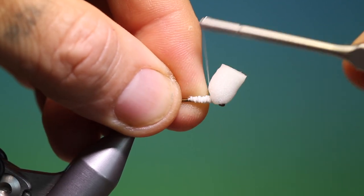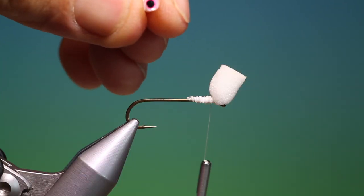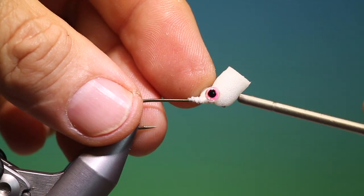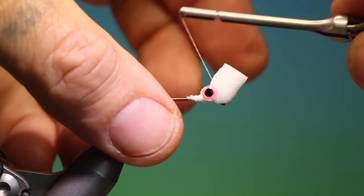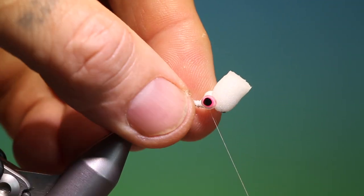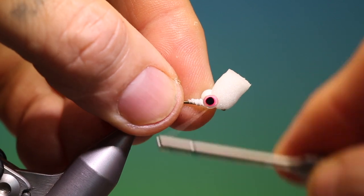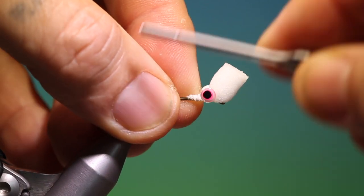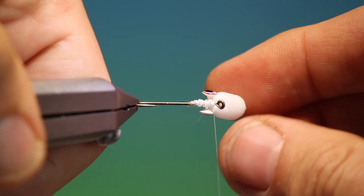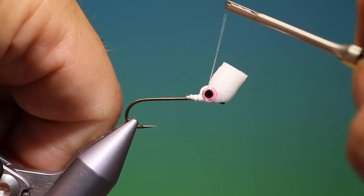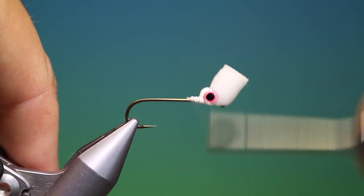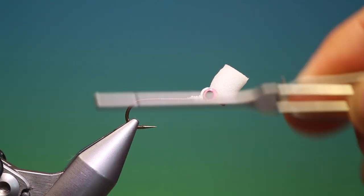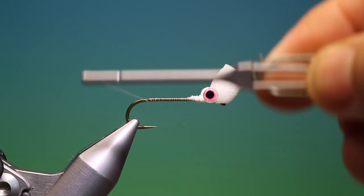Right into the foam head, and I've got some lightweight dumbbell eyes. You can use tape eyes if you wish, but I find these much easier and less messy than doing the whole head in UV resin because it tends to get into the zonker strip. There we are, those are looking good, straighten them up and we can go back over the body to the rear.